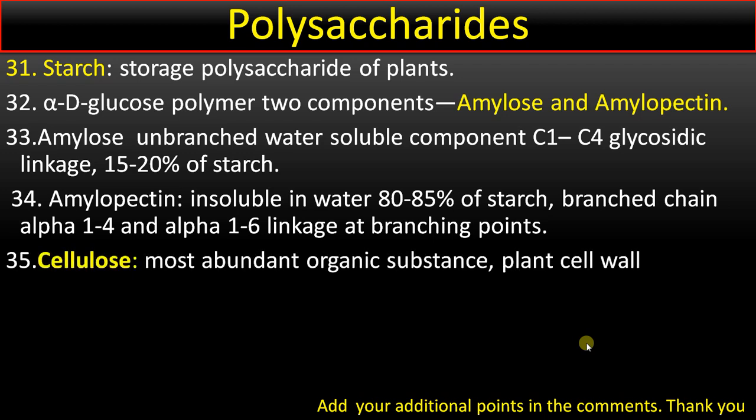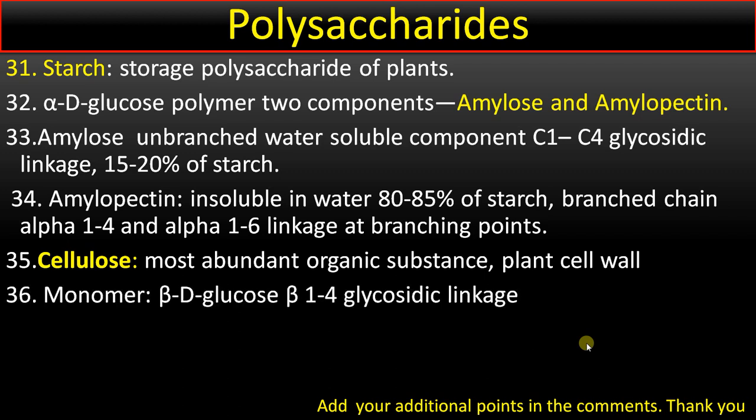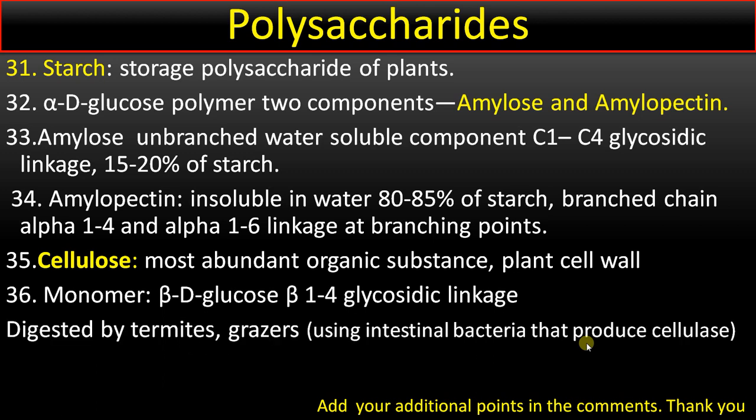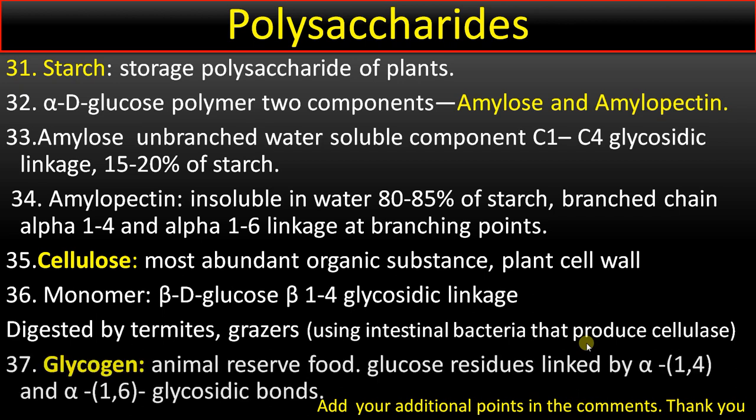Point number 35: cellulose is the most abundant organic substance, present in plant cell walls. The monomeric units are β-D-glucose joined by β-1,4 glycosidic linkage. Storage polysaccharides have alpha linkages, while structural polysaccharides have beta linkages. Cellulose cannot be digested by humans; it is digested by termites and some organisms that have intestinal bacteria producing the enzyme cellulase.